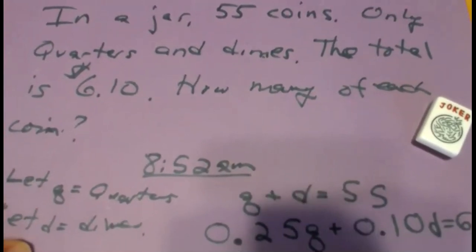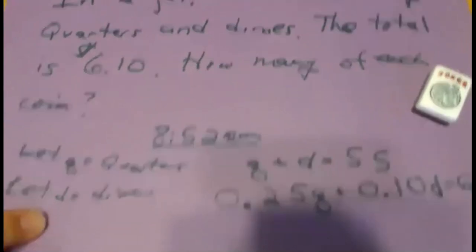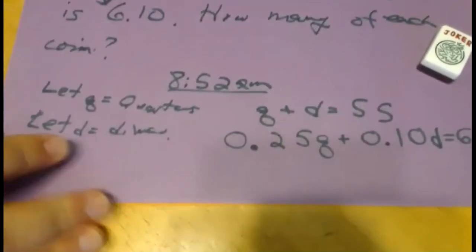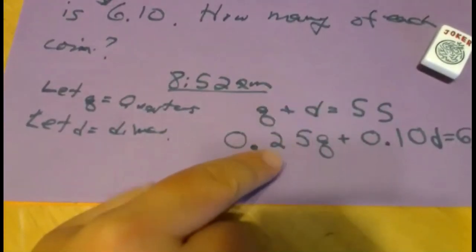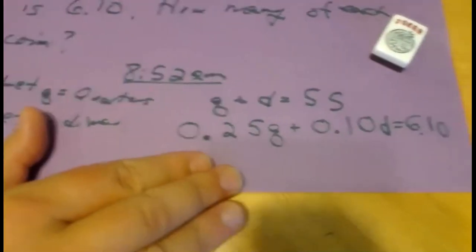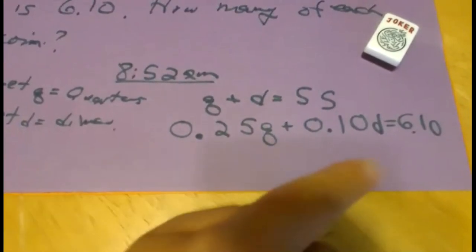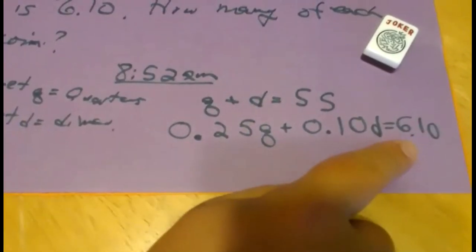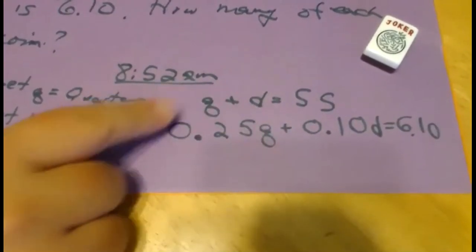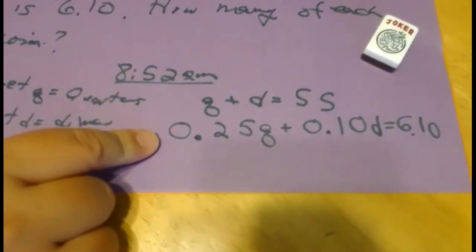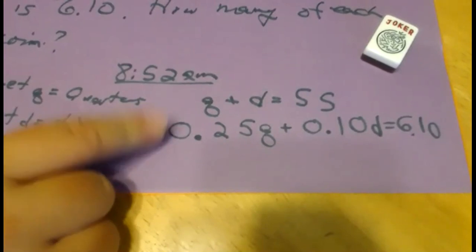The first idea is to relate quarters plus dimes equals 55. The next idea is to relate the dollar amounts, the values of the coins, and make them total the amount. These two equations are what you need to solve the question.